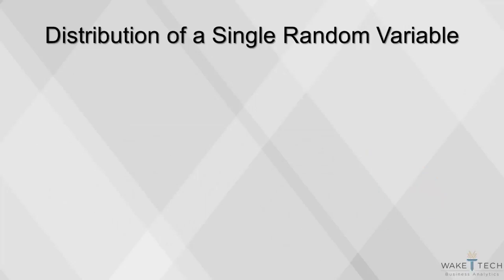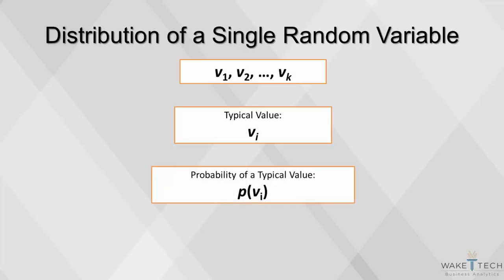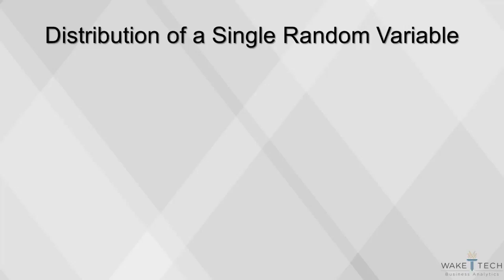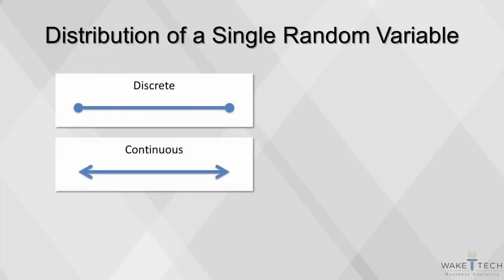To specify the probability distribution of event X, we need to specify all of its possible values and their probabilities. We assume that there are k possible values and write out our list of possible values like this. A typical value is denoted like this, and the probability of a typical value is denoted like this. Next we will discuss distributions of both discrete and continuous variables.